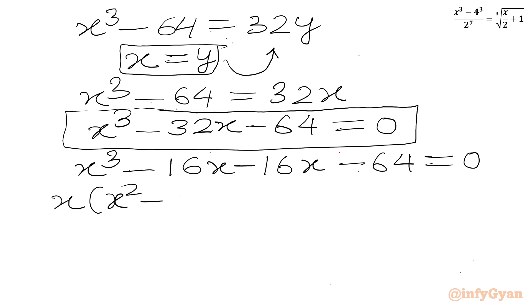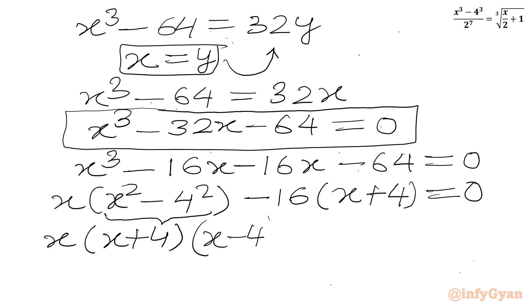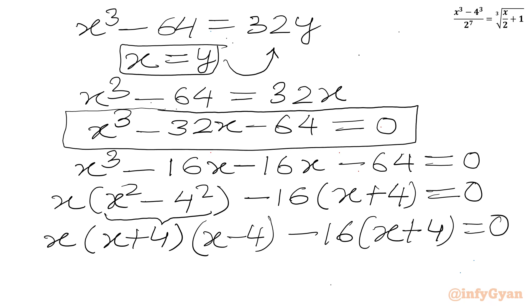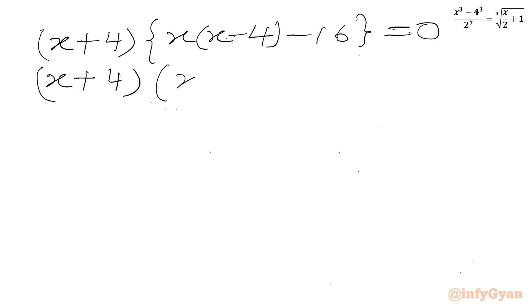Taking x common from the first two terms: x times (x squared minus 16), which is x times (x squared minus 4 squared). From the last two terms, taking minus 16 common: minus 16 times (x plus 4) equal to 0. Now applying the difference of two squares formula, (x plus 4)(x minus 4) appears. So we get (x plus 4)(x minus 4) times x minus 16(x plus 4) equal to 0. Taking (x plus 4) common out: (x plus 4) times (x(x minus 4) minus 16) equal to 0, which gives us (x plus 4)(x squared minus 4x minus 16) equal to 0.